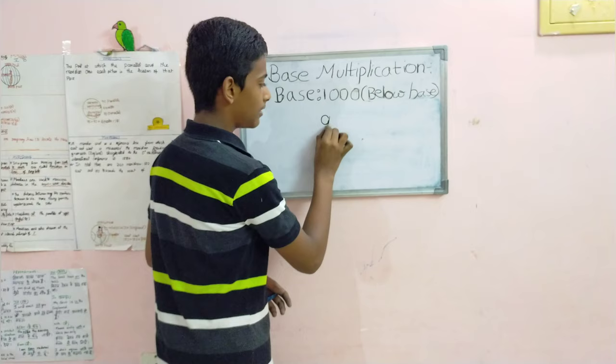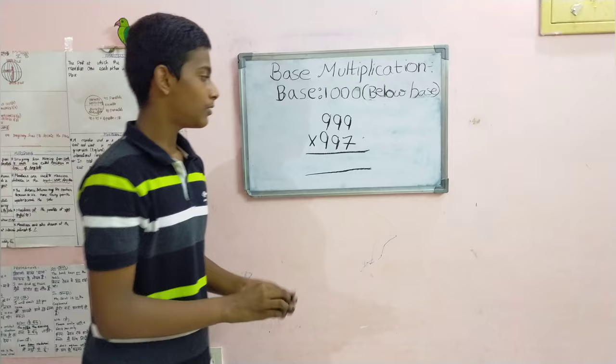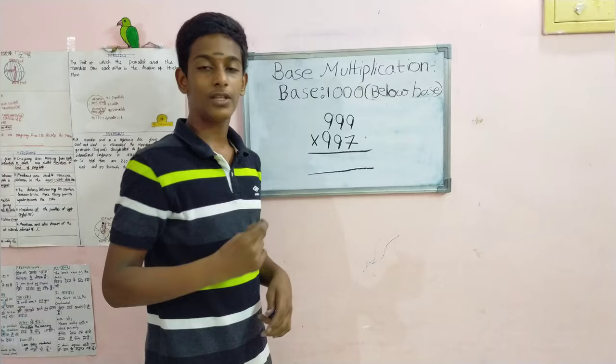That is 999 into 997. That's a large number, right? But using this technique, you can solve this large sum within no time.